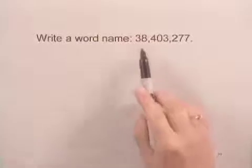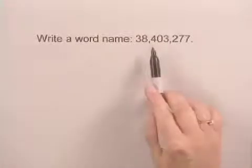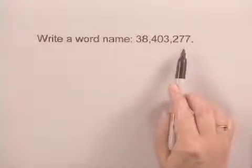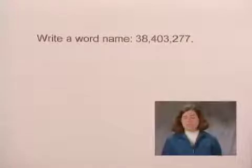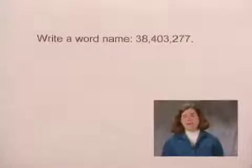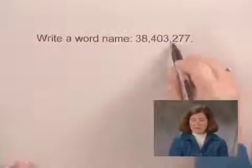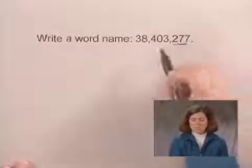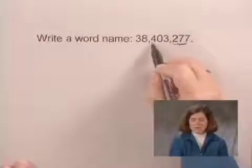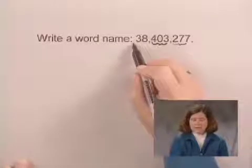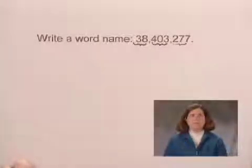In this problem, we're asked to write a word name for 38,403,277. The first thing to note is that the commas divide the number into periods. This is the ones period, the thousands period, and the millions period.